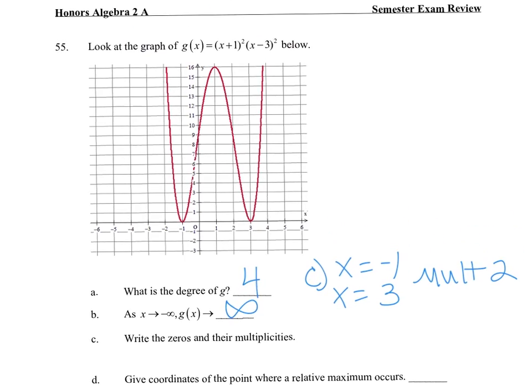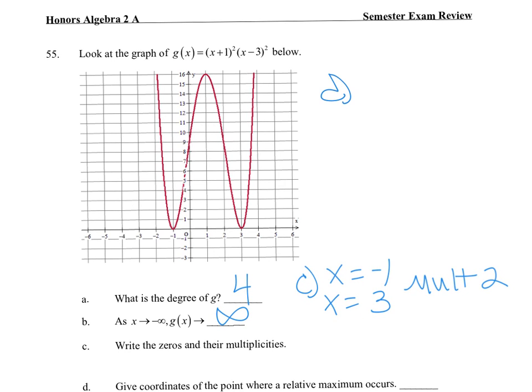Maximum and then minimum. For d, the maximum, the relative maximum is here, that is at (1, 16). And then the relative minimum, well these are the same, so we've got (-1, 0) and (3, 0).